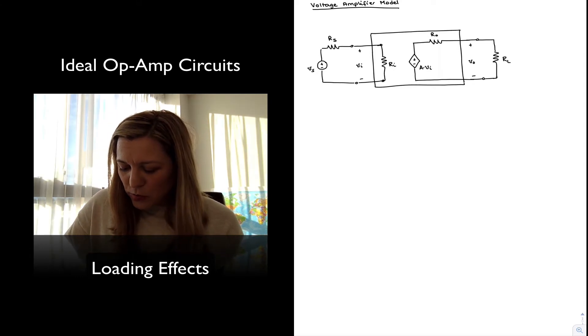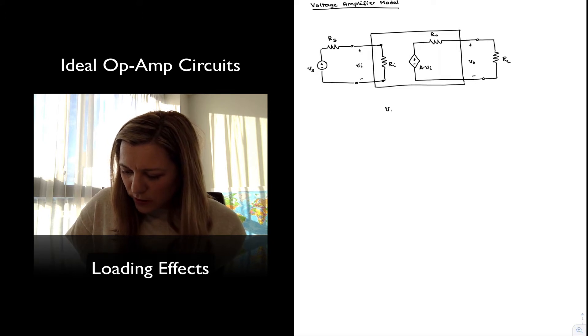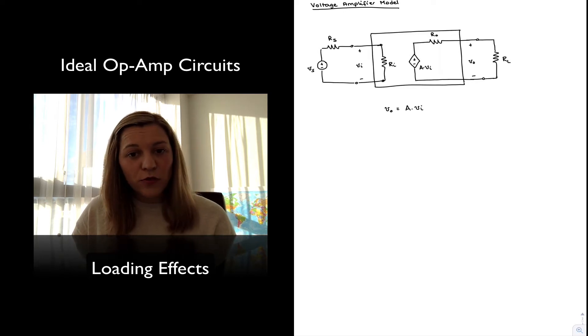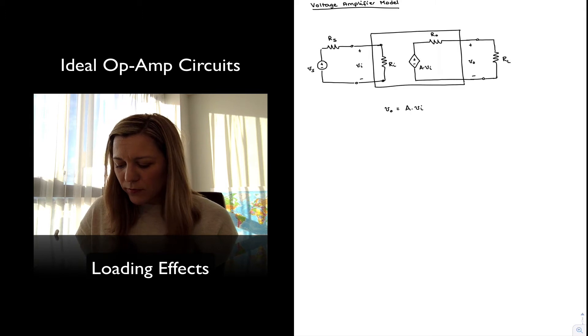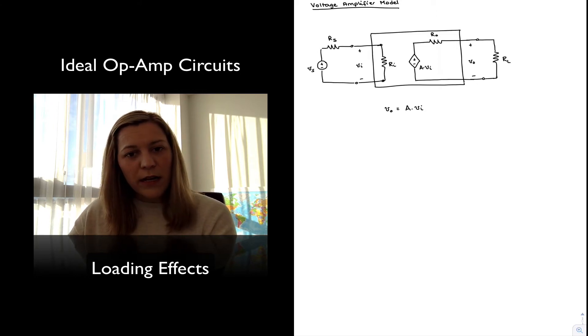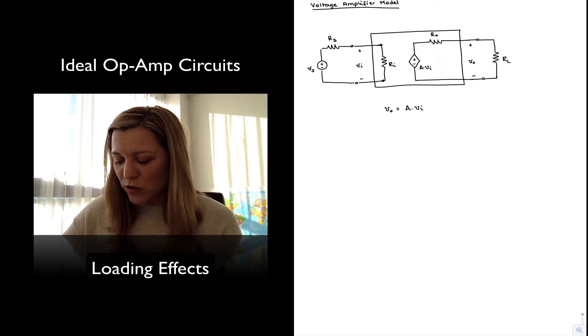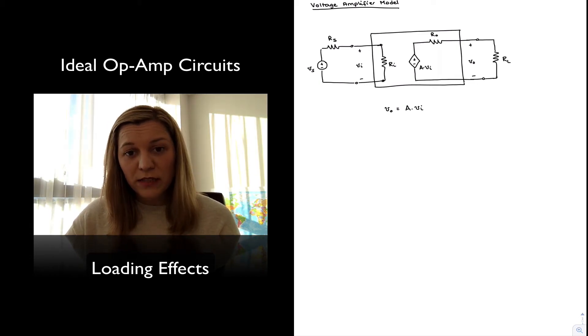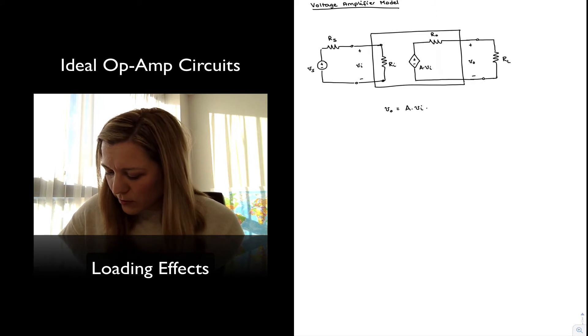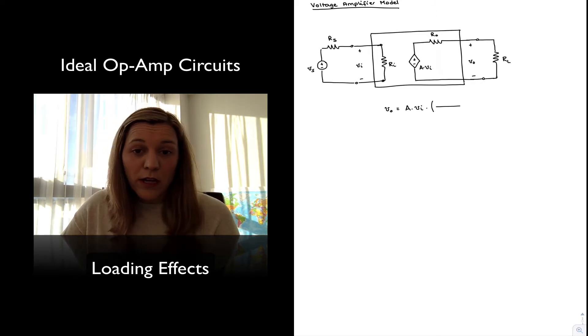Even though as a first-order approximation, we have said the output voltage of the amplifier is equal to the gain times the input voltage, we can now see that there's going to be some interference between RL and R_out, a voltage divider there. Not all of the output voltage is going to be sent out to the load resistance RL, but some of it is going to drop across R_out. How much drops across R_out is going to be represented via the voltage divider equation or the output loading factor.